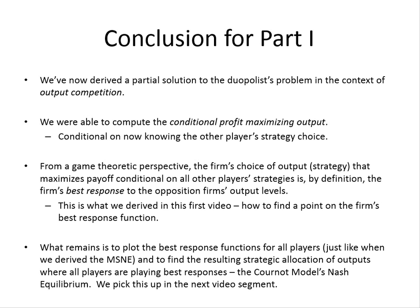In a later video, we'll actually plot the best response functions for all players — not just firm one, but also firm two's best response against firm one. The objective from that point forward will be to solve for the Nash equilibrium by finding the output levels where both firms are playing mutual best responses, invoking the definition of the Nash equilibrium. We'll do this in the next video segment. I hope you enjoyed this quick crash course on how to convert a basic duopoly problem in quantity competition into a much simpler monopoly problem.